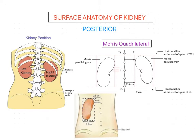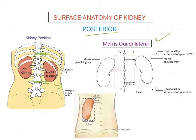The surface marking of the kidney on the posterior aspect of the body is done by drawing the Morris quadrilateral. The two kidneys are located between the levels of T11 and L3, so both kidneys are located between these two spinal levels.